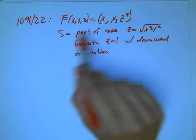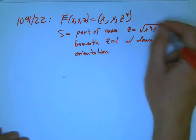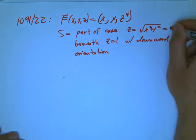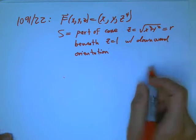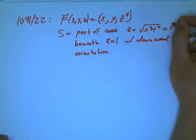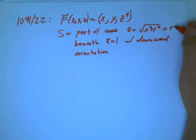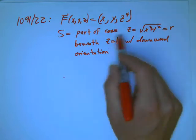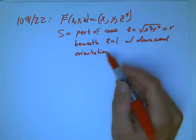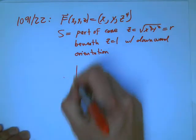And the surface is the part of the cone z equals root x squared plus y squared. We can also write that as z equals r, which is very helpful. That's the polar and cylindrical r, not rho, not the distance to the origin in three dimensions. It's the part of the cone beneath z equals 1 with the downward orientation. So let's sketch that.